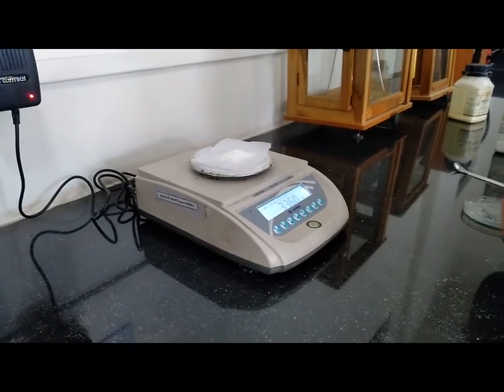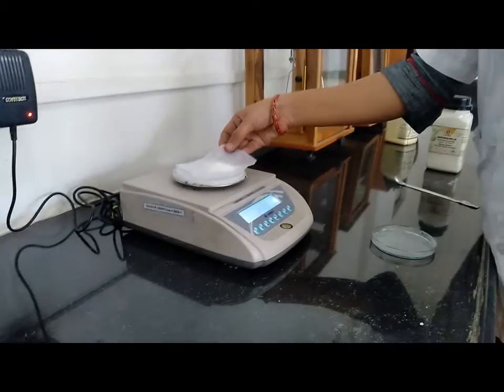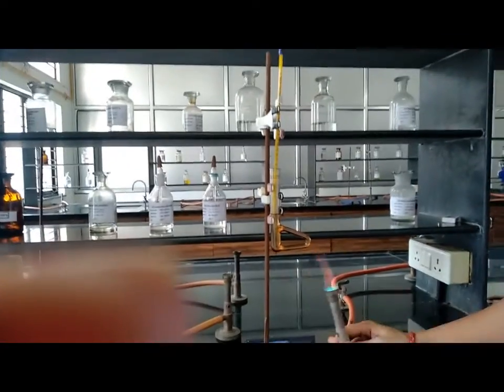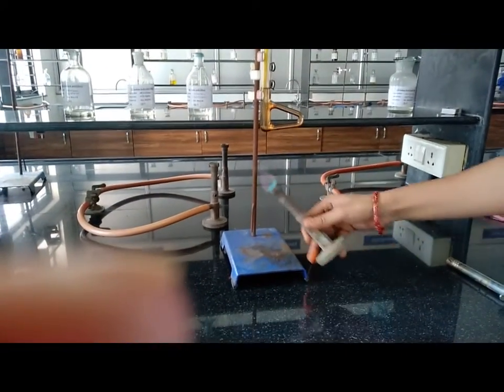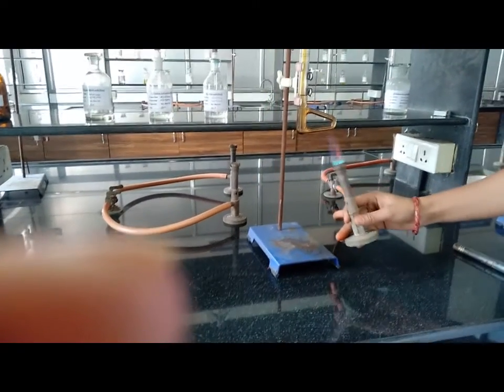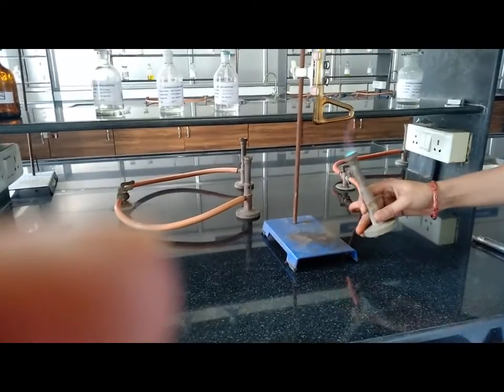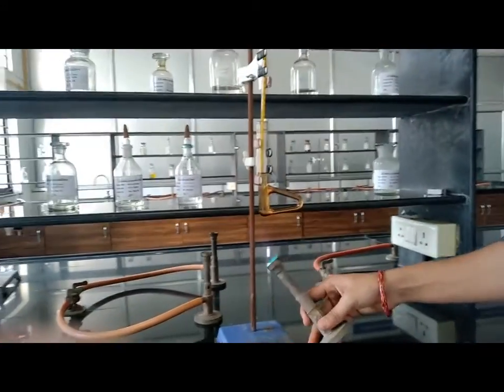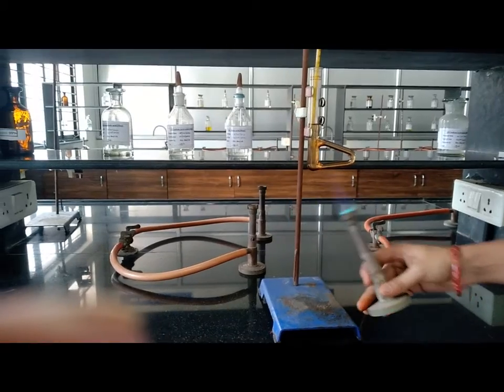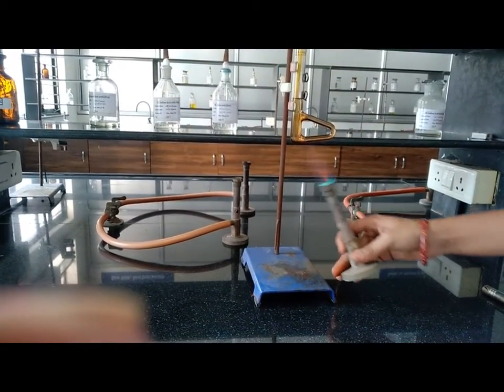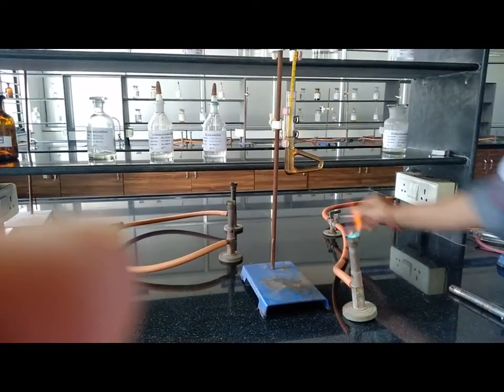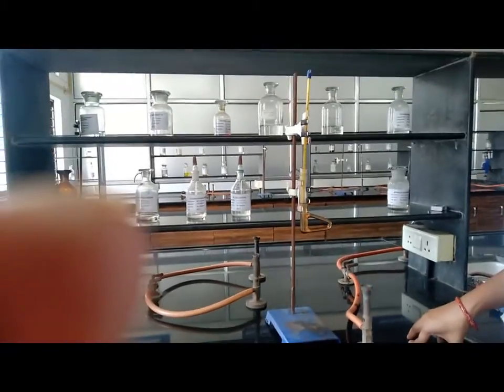We have to perform melting point determination. The melting point of the given synthesized product is determined by using the melting point determination method. After solid particles get converted into liquid, we have to stop the heating and record the melting point. Now solid particles almost converted into liquid, stop the heating. The melting point is 78 degrees Celsius.